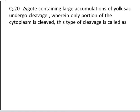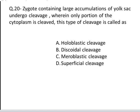The next and final question is: zygotes containing large accumulations of yolk undergo cleavage wherein only a portion of the cytoplasm is cleaved. This type of cleavage is called. These are your four options: A. Holoblastic cleavage, B. Discordant cleavage, C. Meroblastic cleavage, and D. Superficial cleavage. The correct answer is C, Meroblastic cleavage.